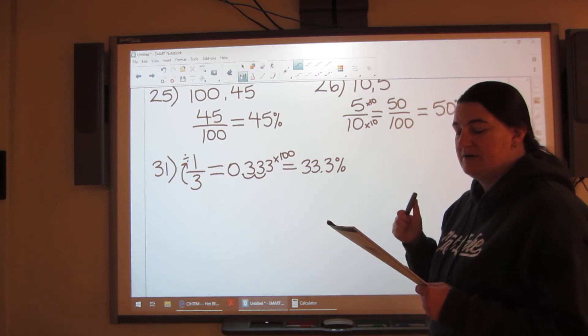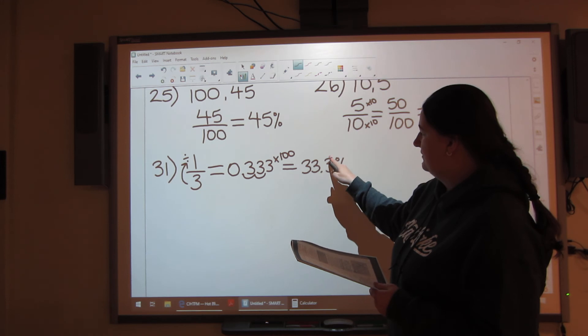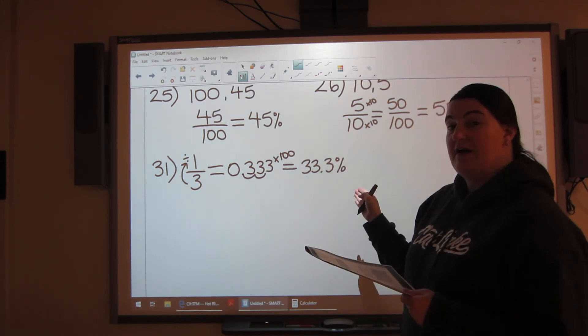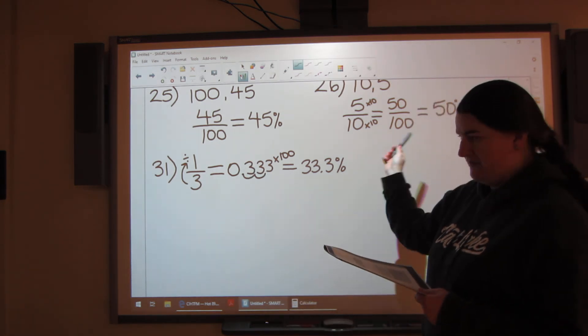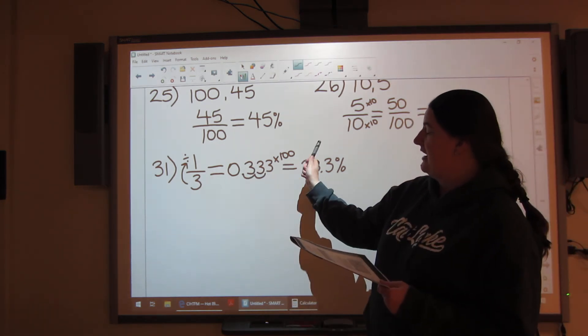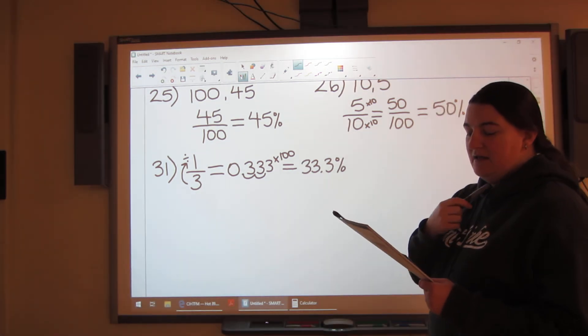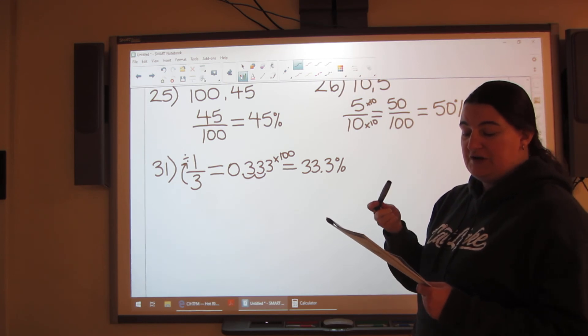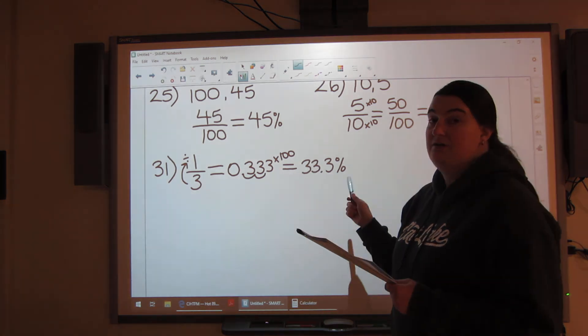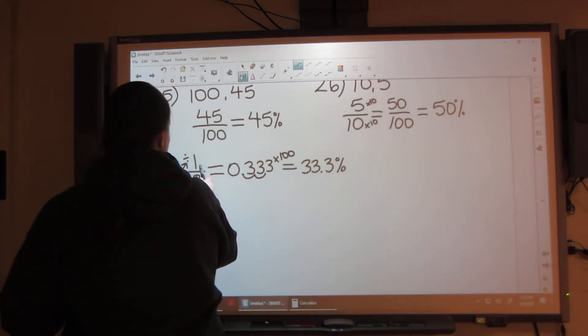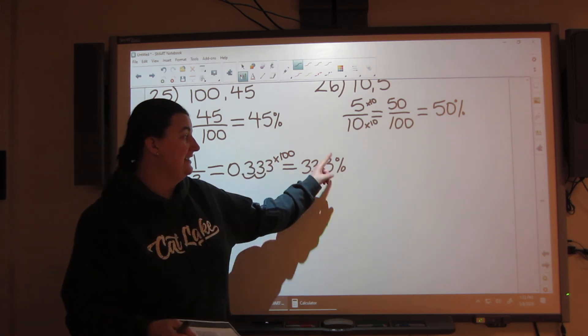So now I've got 33.3 percent, which is what they've asked me to do. Express each fraction as a percent to the nearest tenth. Well, here's the tenth column. So here's the tenth. Make sure you have a tenth. And so 0.3333333 times 100 is 33.3 percent. So for questions 31 all the way to 39, that's how you need to figure this out. You need to use division to get the decimal. And then you need to multiply by 100 to get the percent.